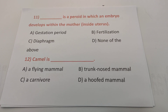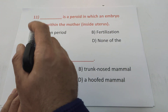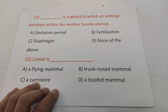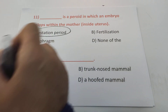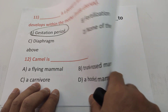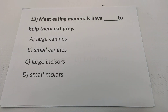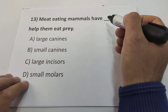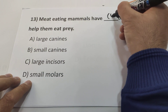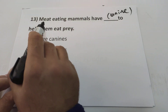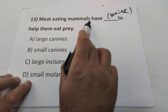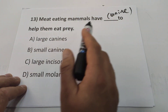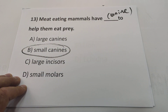Question eleven: the period in which an embryo develops within the mother inside the uterus is called the gestation period. Question thirteen: meat-eating mammals have large canine teeth. Plant-eating mammals have large incisors. So meat-eating mammals have large canines — for example, lions.